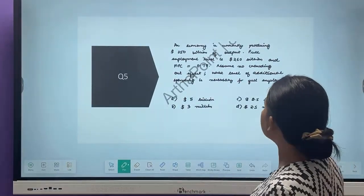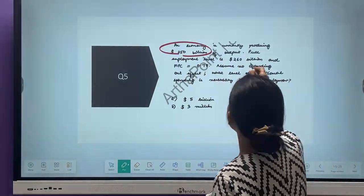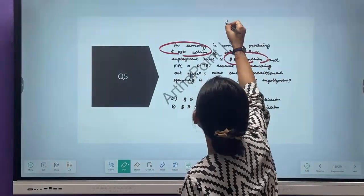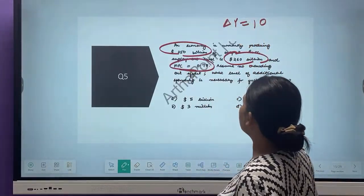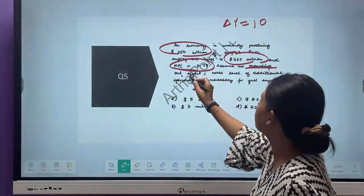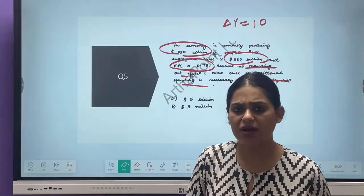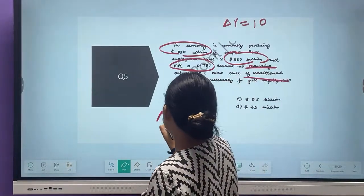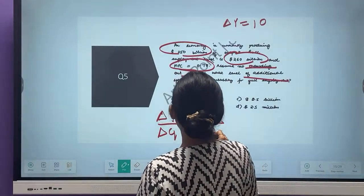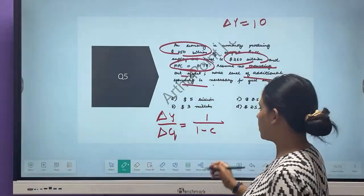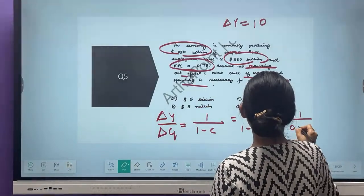Let's look at the next one. In an economy currently producing 250 billion of output, full employment level is 260. So I need to change output by 10. MPC is 0.75, no crowding out effect. What is the additional spending needed? What is the formula of multiplier? Change in Y by change in G is equal to 1 upon 1 minus small c. 1 upon 1 minus 0.75, which is 1 upon 0.25. This would be 4.